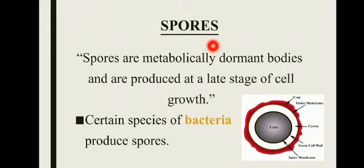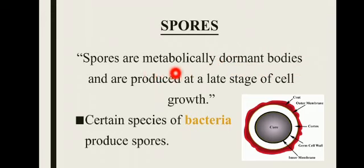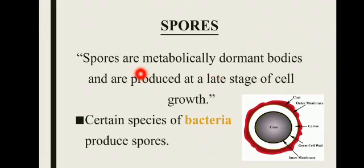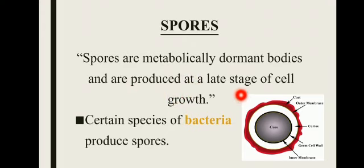اس کے بعد ہمارے پاس spores ہیں۔ Spores کو dormant bodies کہتے ہیں۔ Dormant bodies وہ ہوتی ہیں جو اپنے آپ کو inactivate کر لیتی ہیں، مطلب اپنی growth روک لیتی ہیں، اور یہ تب ہوتا ہے جب conditions unfavorable ہوتی ہیں۔ Unfavorable conditions میں bacteria dormant bodies بنا لیتے ہیں جو metabolic process روک دیتی ہیں، جس سے growth بھی رک جاتی ہے۔